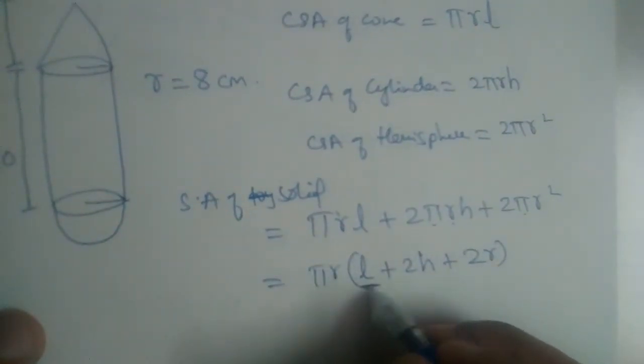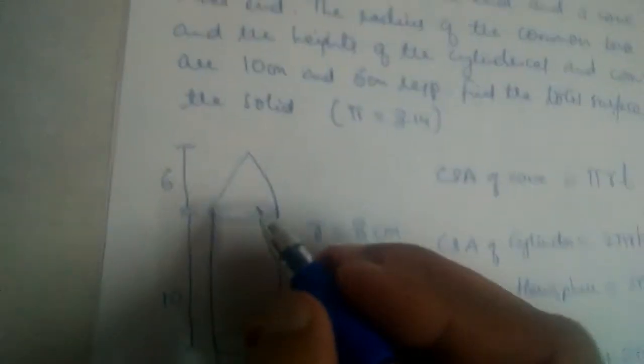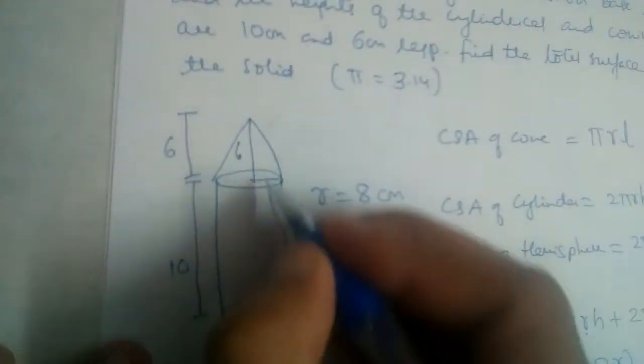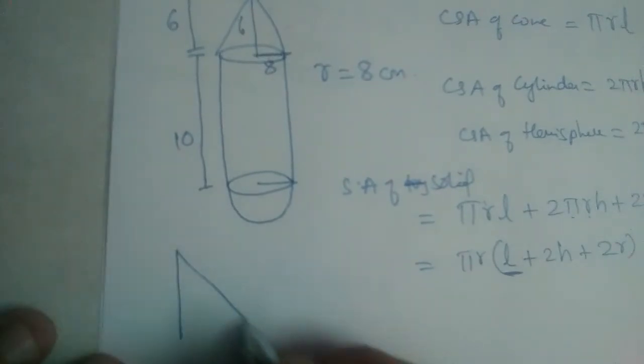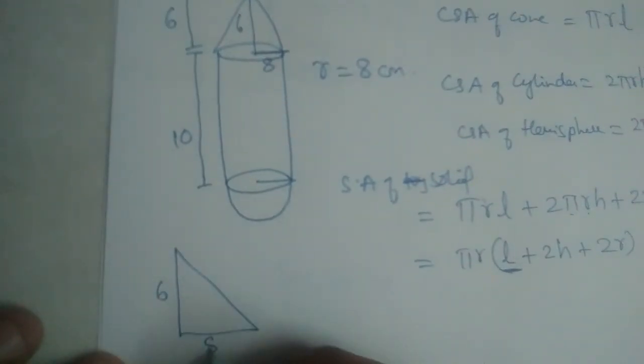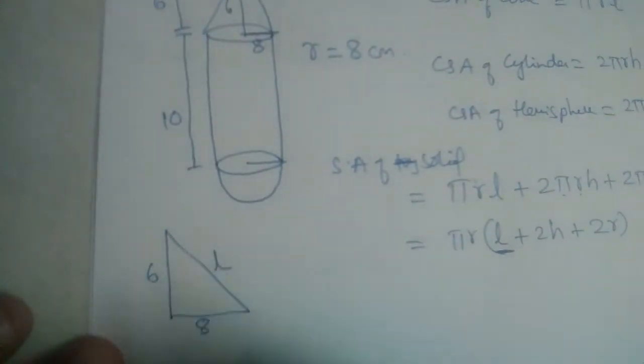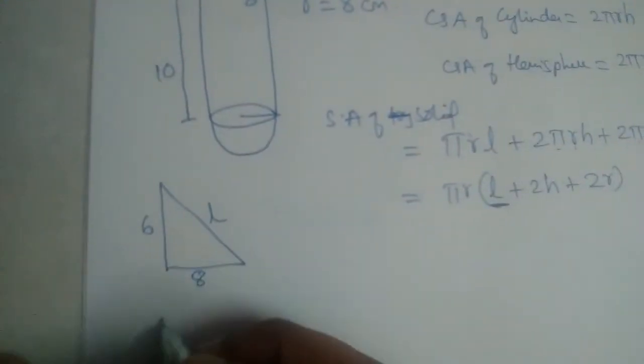We need to find L also. This is 6, height is 6 and radius is 8 given. This is L slant height. So using Pythagoras theorem, we can find H² plus R².